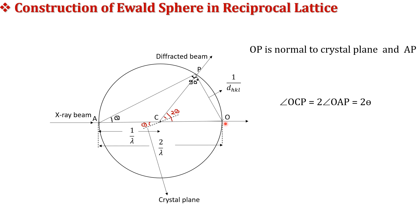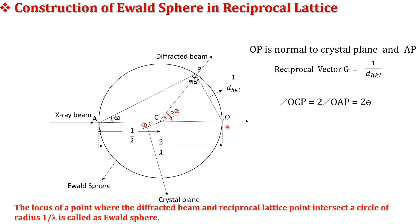When the reciprocal lattice vector and the diffracted beam intersect at a point, then diffraction is possible. Such a sphere is called the Ewald sphere. The Ewald sphere is defined as the locus of points where the diffracted beam CP and reciprocal lattice points O and P intersect a circle of radius equal to 1/lambda. That construction is called the Ewald sphere.